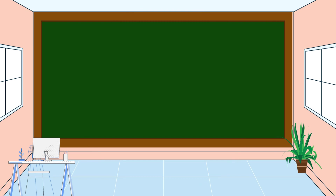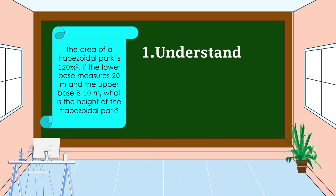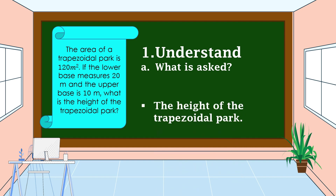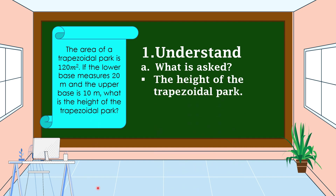How are we going to solve the problem? We're going to use the four-step plan. First, we should understand the problem. We should know what is asked. What is asked in this problem? This problem is asking for the height of the trapezoidal park.